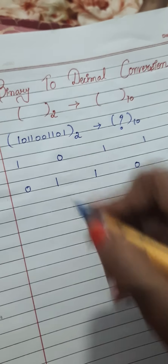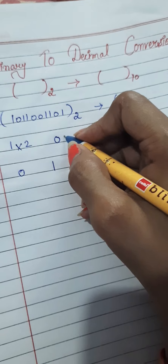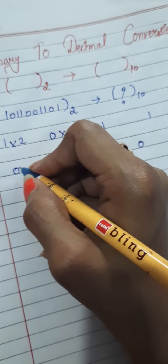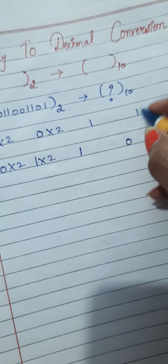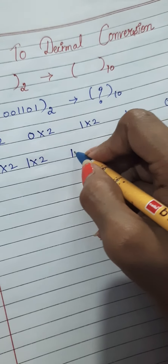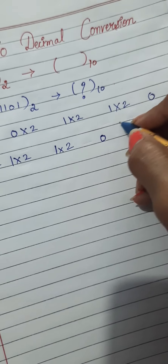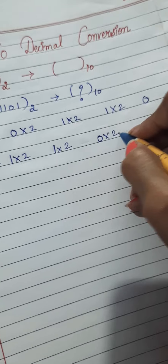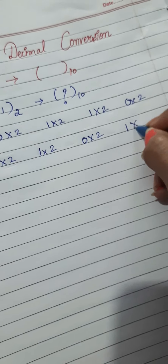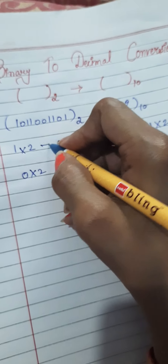After writing the digits, multiply every number by 2 and put a plus sign between each of them.